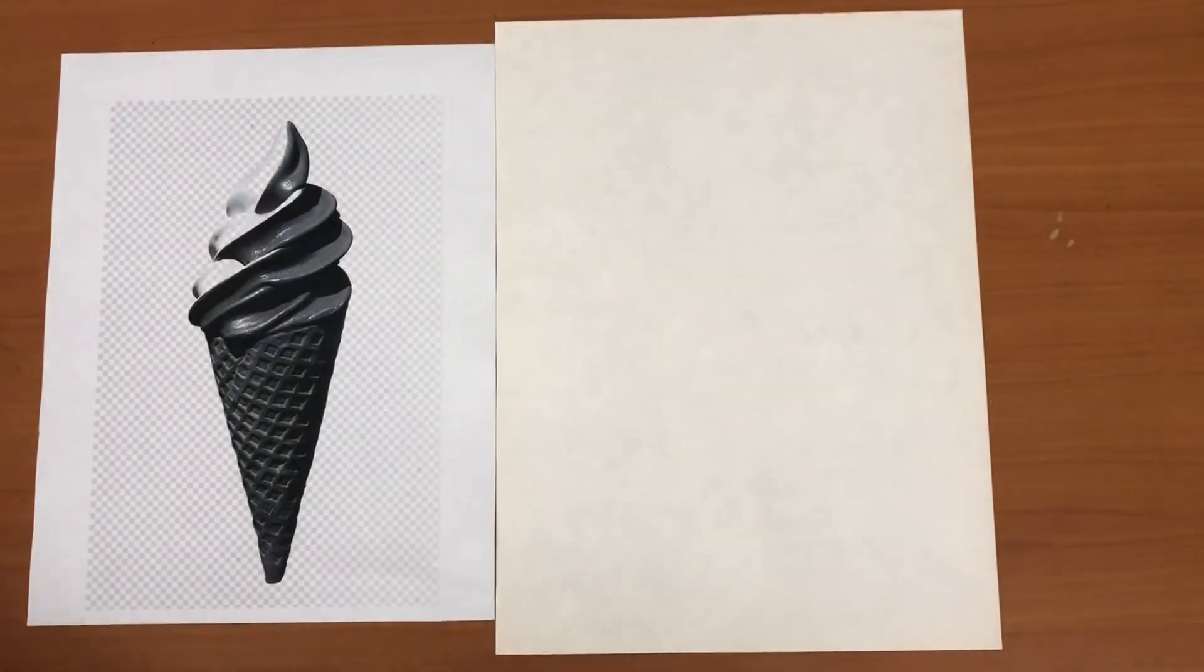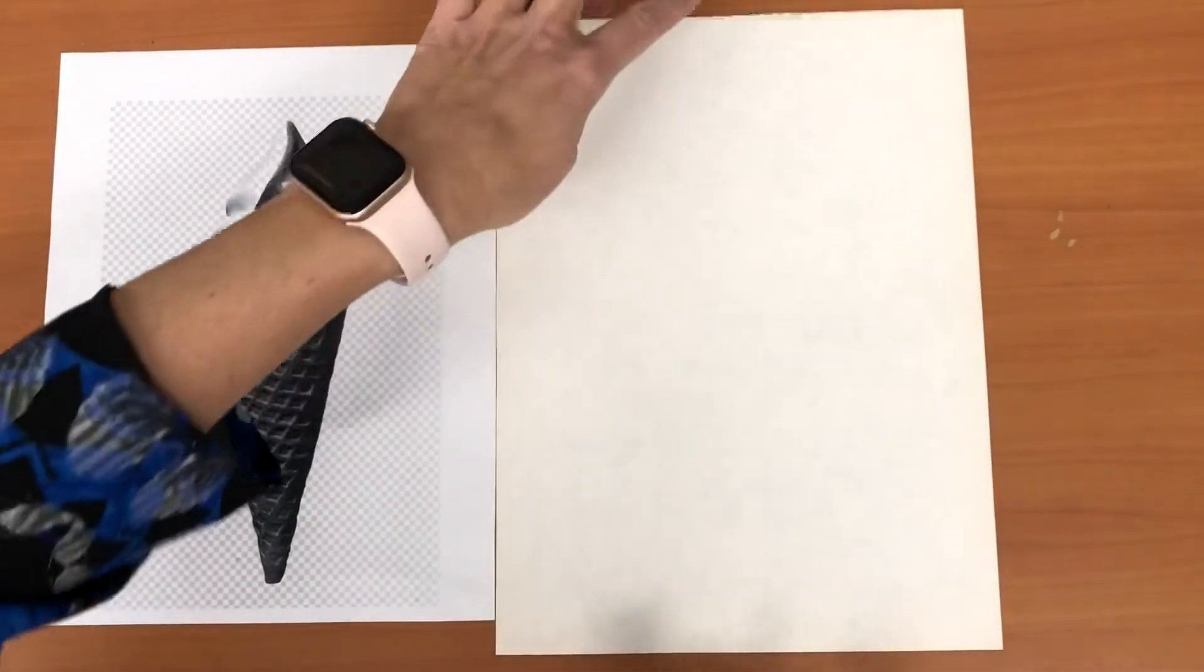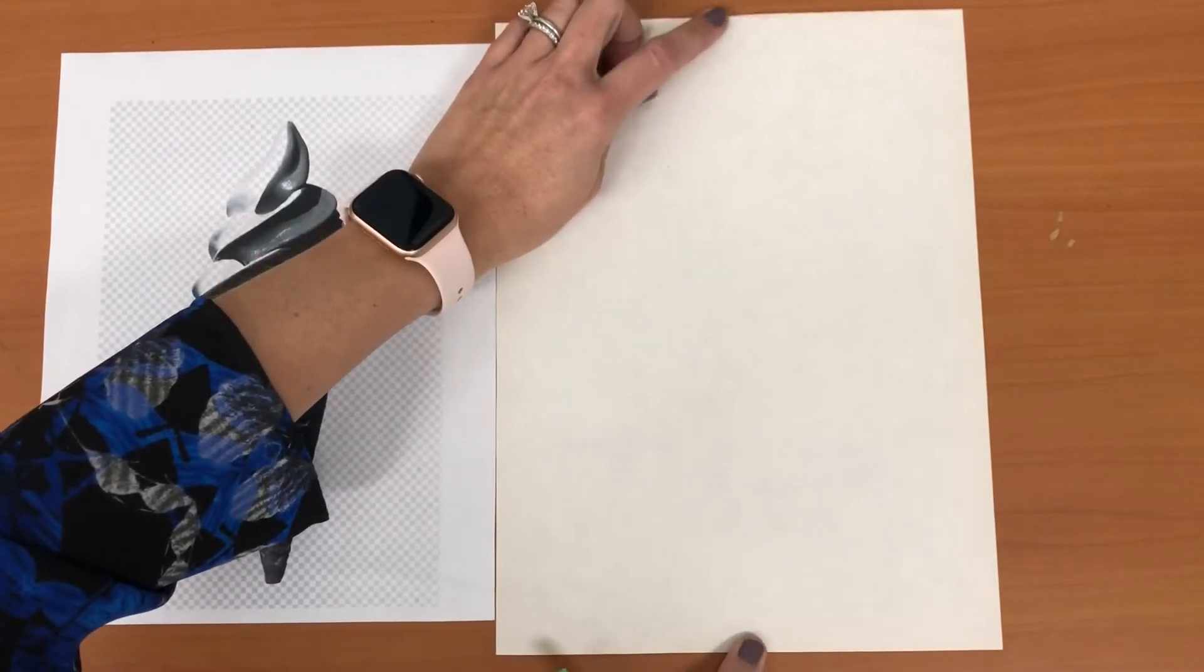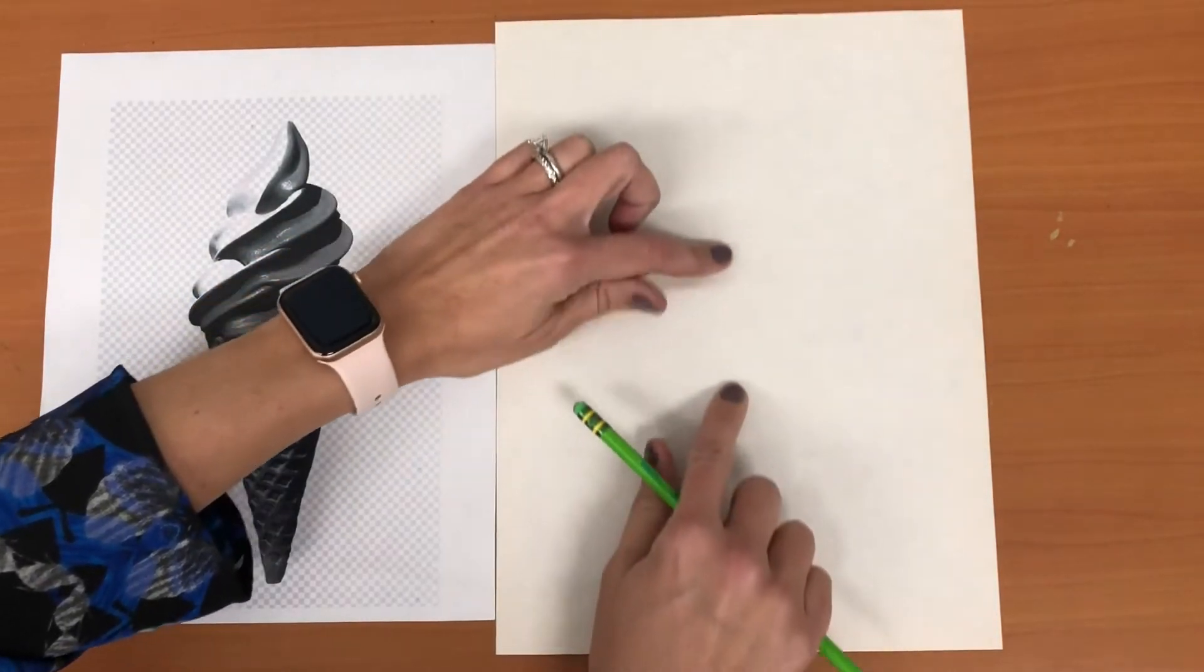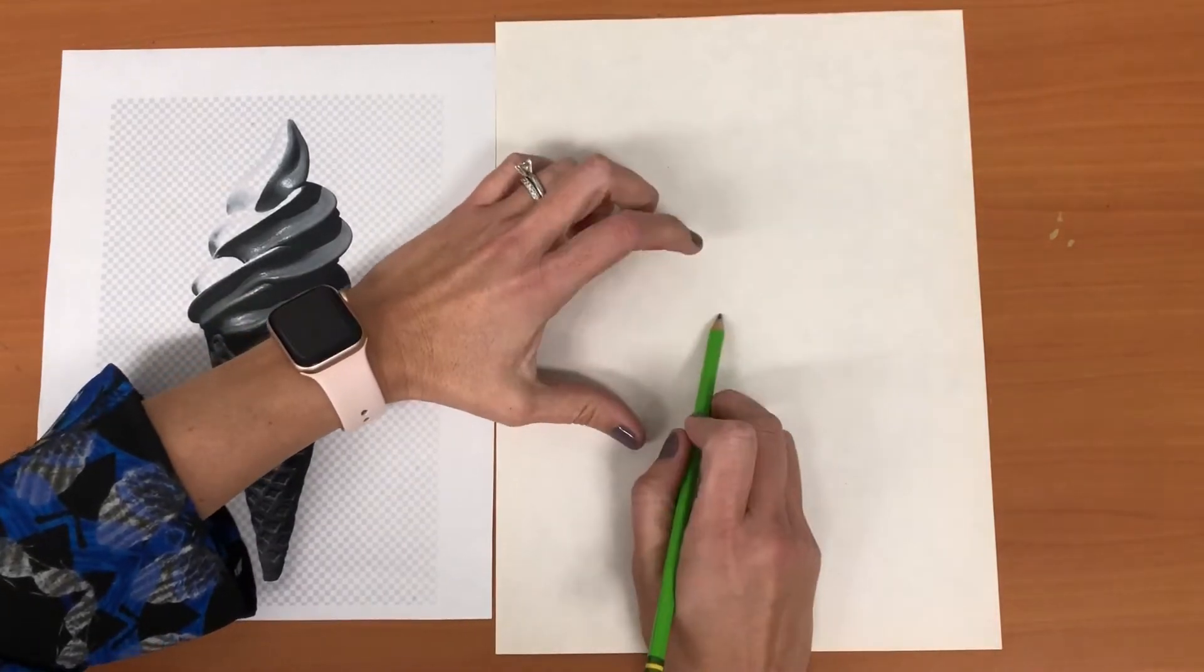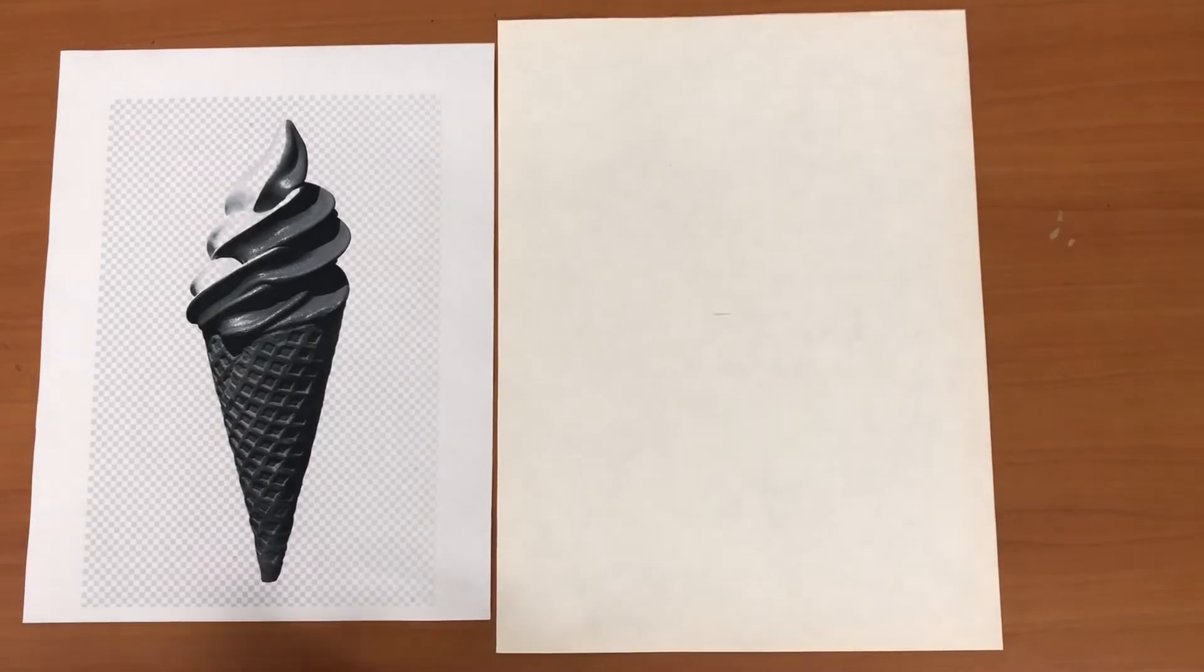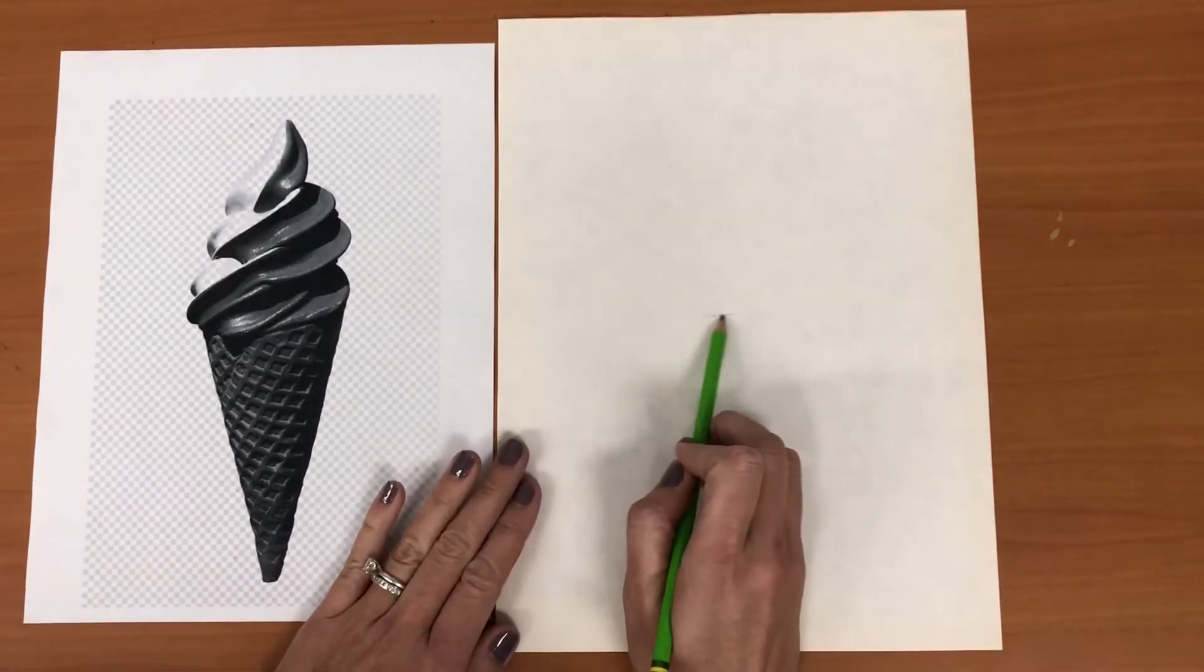Okay so we are gonna start by finding the middle of our paper. The easiest way to do this is to put your fingers on the top and the bottom and to slowly evenly bring them together and where they meet just make a little mark and that is your approximate middle. That is a good guesstimator. There's no need to get out a ruler.